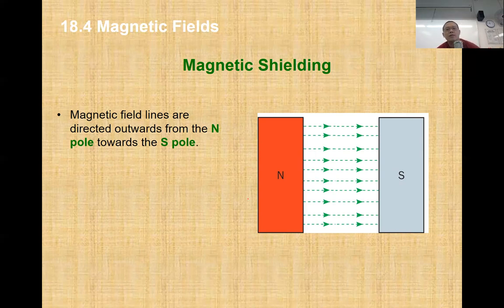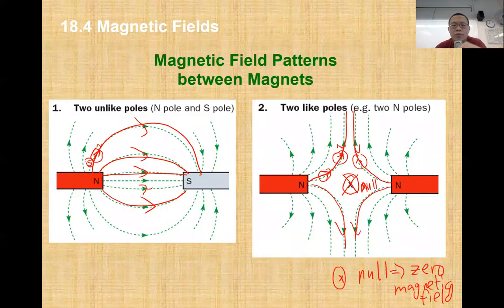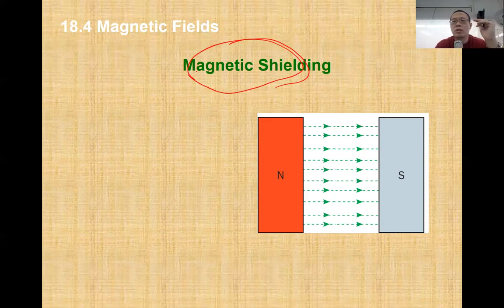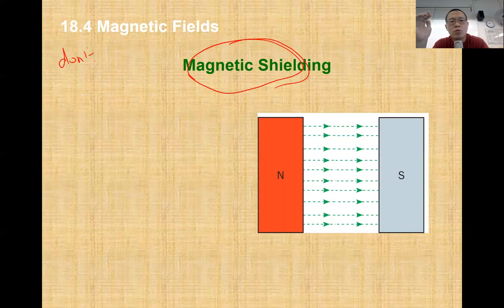One of the last points to mention is this: with north-north like poles, because of repulsion you have the ability to create a null zone. The null zone is actually quite useful - it is useful in what we call magnetic shielding. Magnetic shielding is creating an area where you don't experience any magnetic field effects, any magnetic field lines, any magnetism.